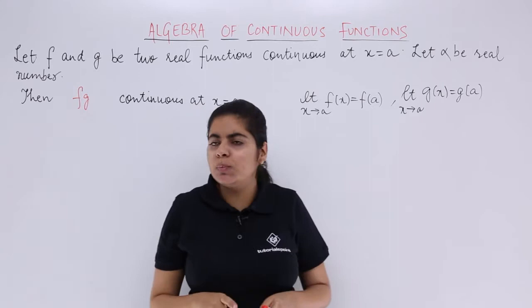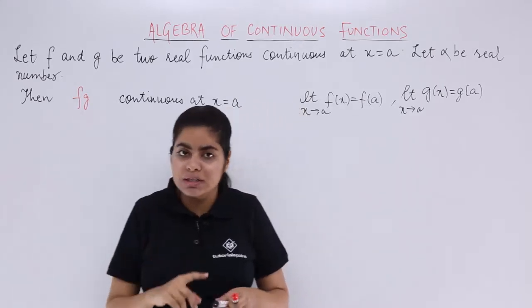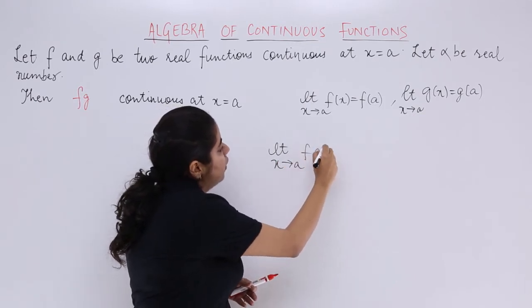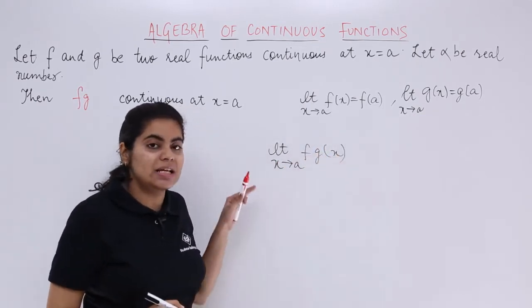And what are we supposed to prove? We are supposed to prove for the product. So let's take the product limit x tends to a, and we have the product wherein the functions are subject to x.